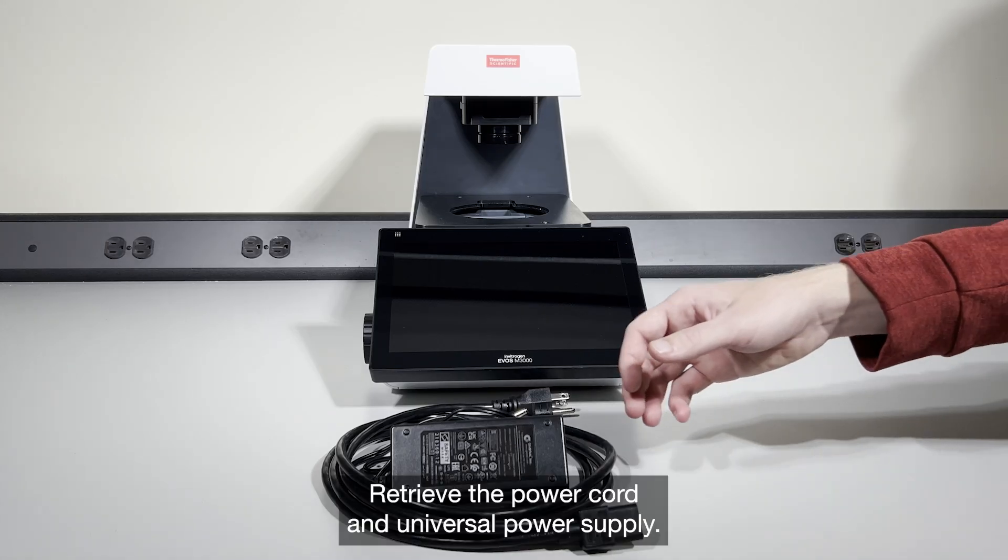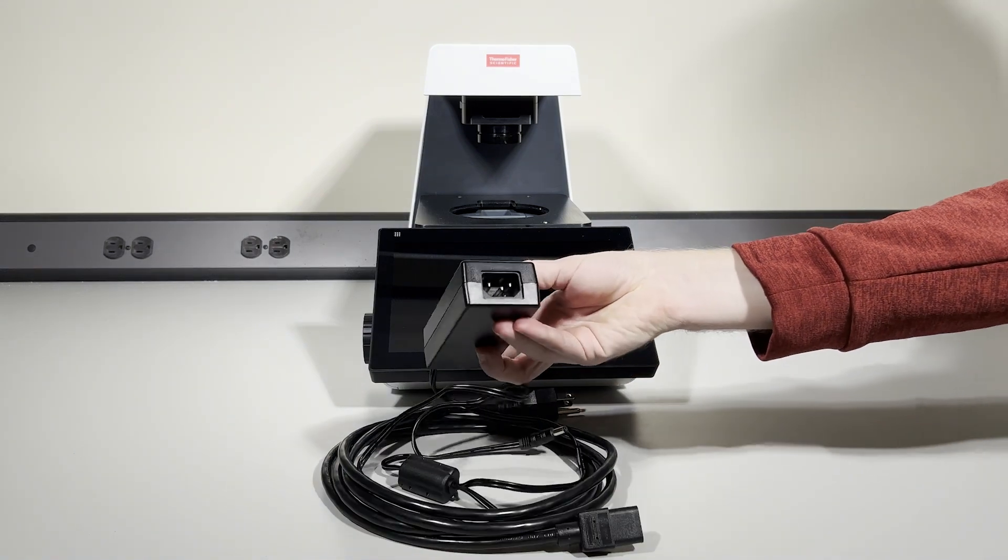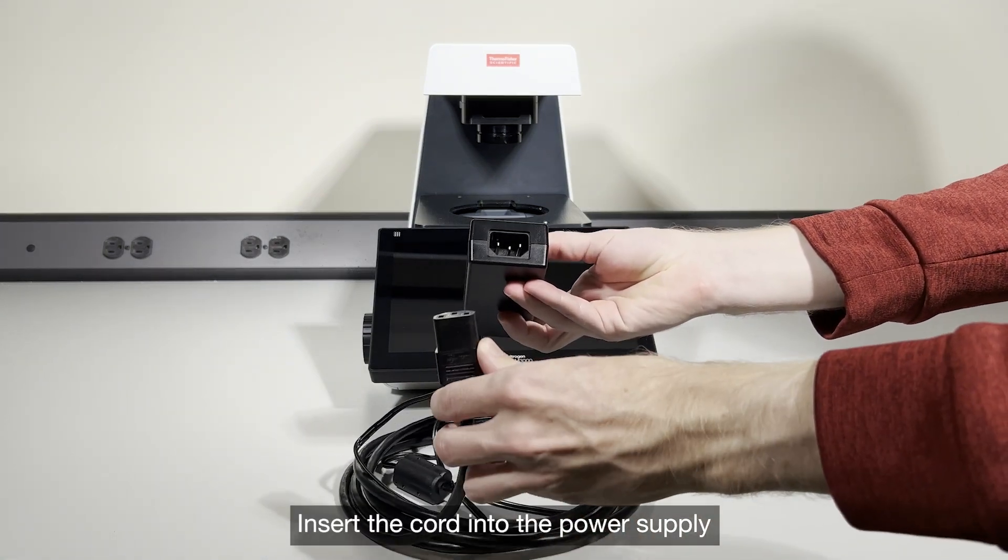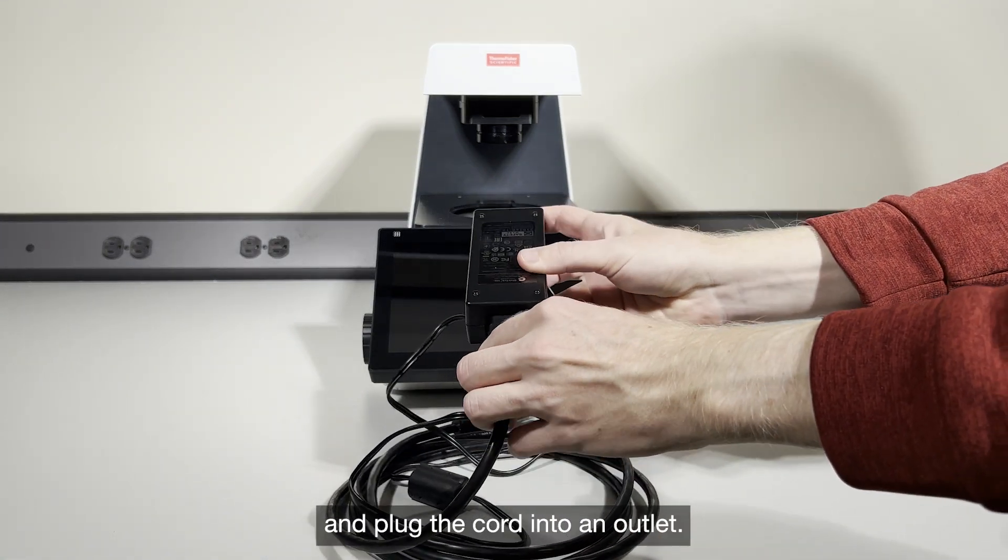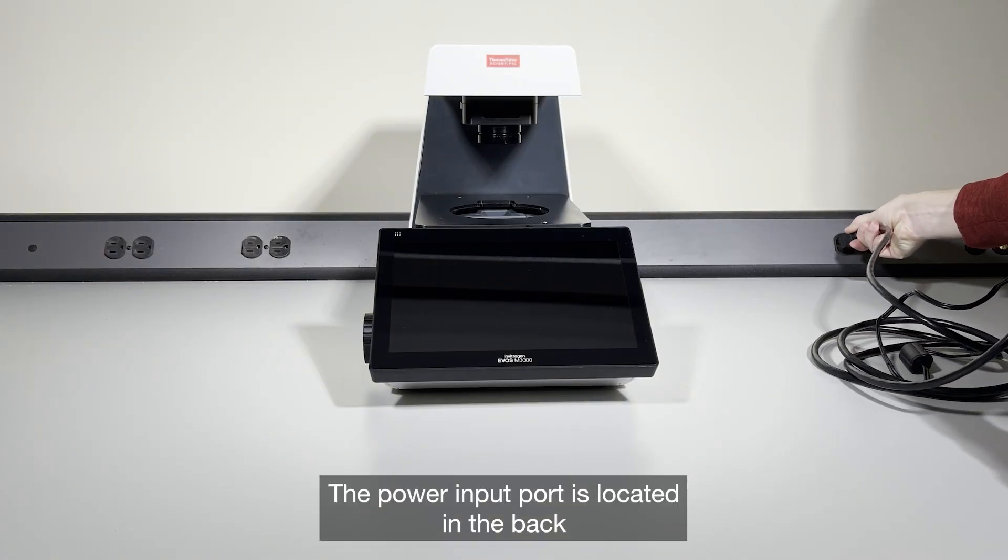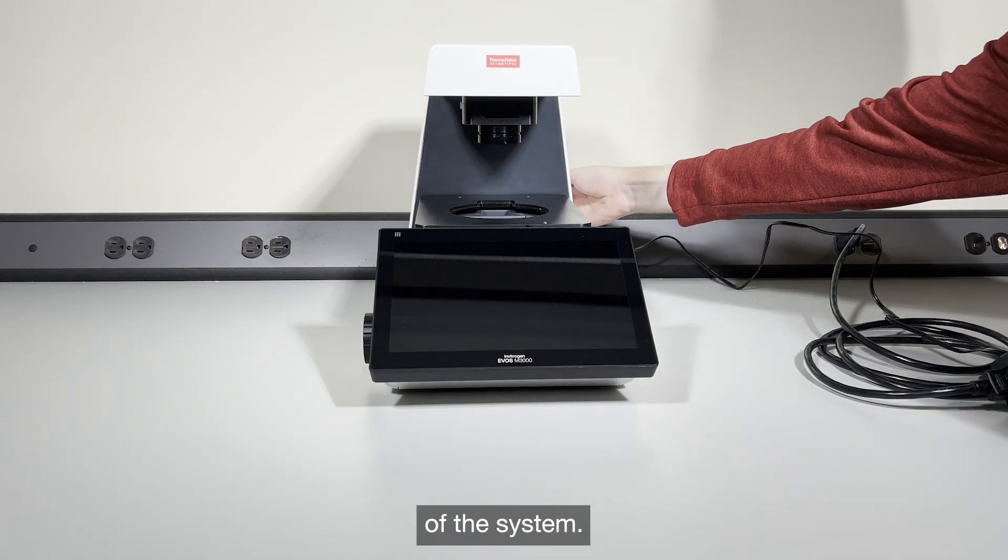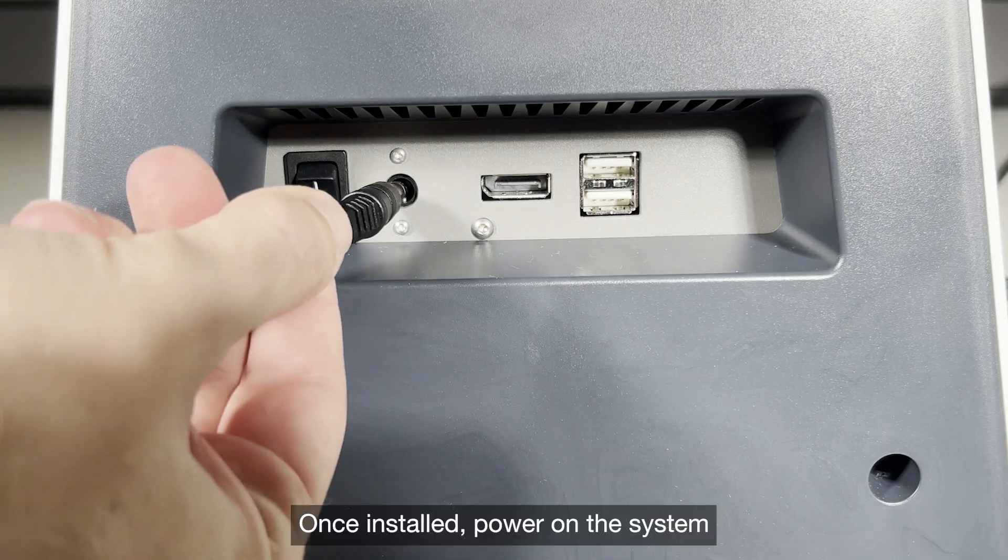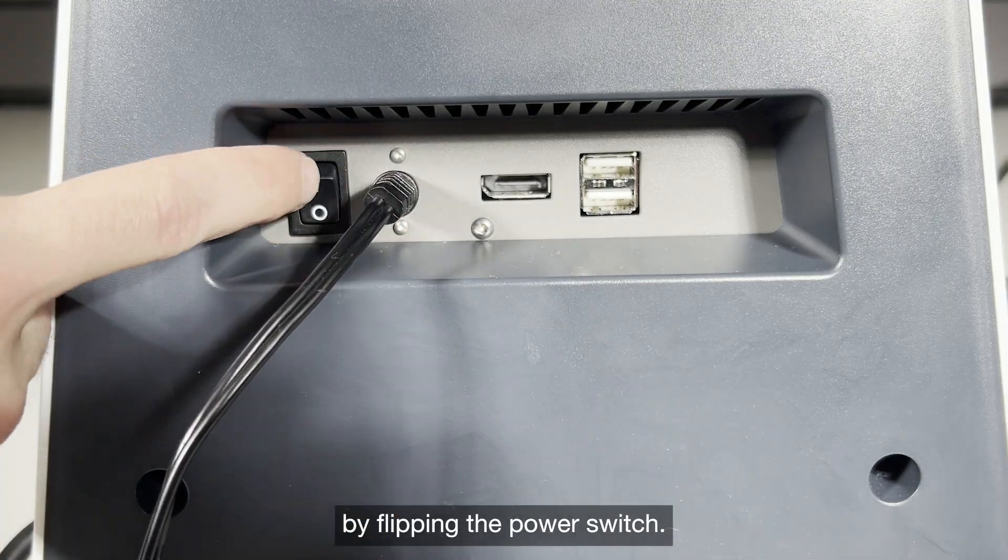Keep the power cord and universal power supply. Insert the cord into the power supply and plug the cord into an outlet. The power input port is located in the back of the system. Once installed, power on the system by flipping the power switch.